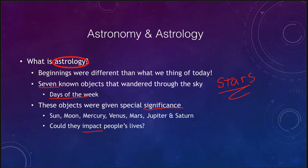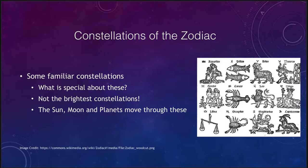Some of the things we know about astrology you may be familiar with — the constellations of the zodiac. The constellations of the zodiac are actually astronomical in nature. You will recognize these if you've ever followed a horoscope: things like Aquarius, Pisces, Aries, Taurus, and so on.